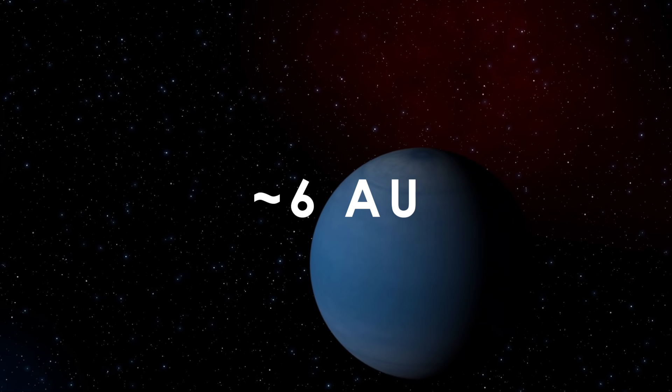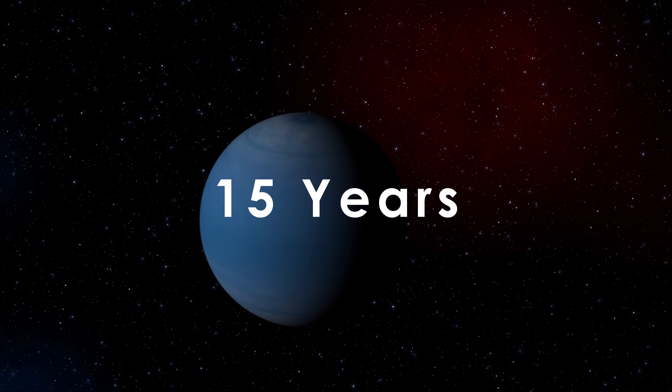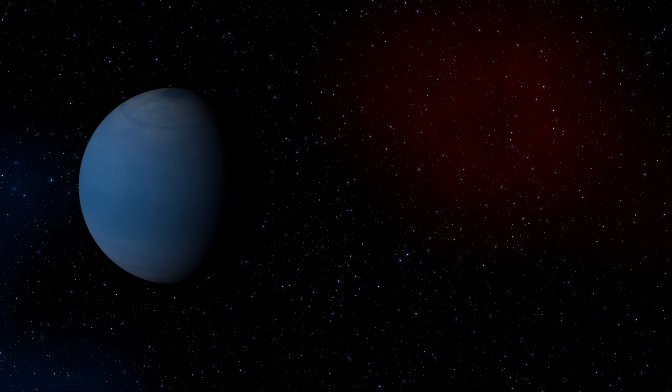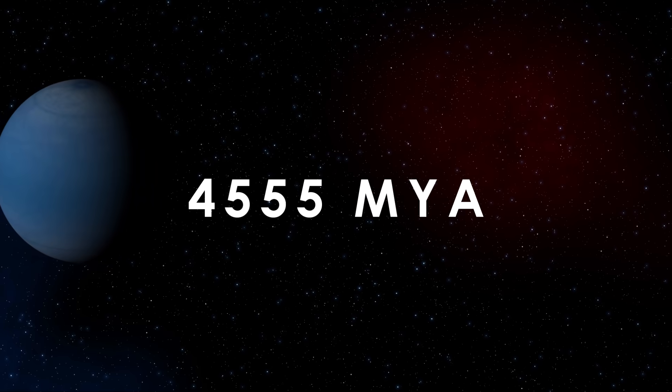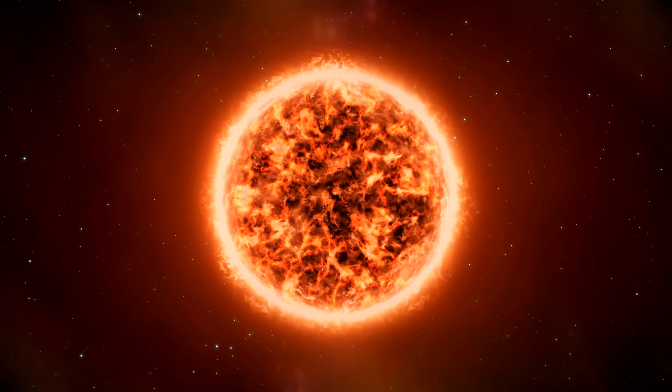This fifth gas giant, which likely formed around 6 astronomical units from the Sun with a period of approximately 15 years, formed in the very early solar system. It was likely older than the Earth, forming at around the same time as Uranus and Neptune 4.555 billion years ago. This would also predate the ignition of nuclear fusion in our Sun itself.